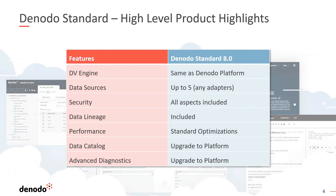Donato Standard is built on the same Donato platform engine you've been familiar with. It comes with up to five data sources, and all aspects of security are included — authentication, access authorization, data lineage, and performance are key strengths included. If you're looking for data catalog capabilities, you would need to upgrade to the Platform tier, along with some other data management capabilities only available through Platform.